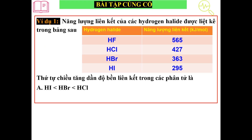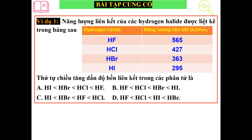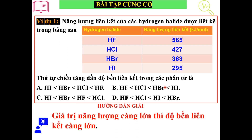Chúng ta đi qua ví dụ thứ nhất: năng lượng liên kết của hydrogen halide được liệt kê trong bảng số liệu. Ở đây chúng ta có HF, HCl, HBr, HI. Em thấy cái năng lượng liên kết nó càng giảm xuống: 565, 427, 363 và 295. Thứ tự tăng dần độ bền liên kết. Các em thấy là giá trị của năng lượng càng lớn thì độ bền của liên kết nó càng lớn. Như vậy chúng ta sẽ chọn đáp án là A: HF bền hơn HCl, bền hơn HBr và bền hơn HI.